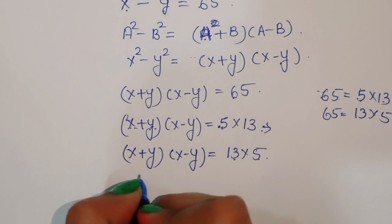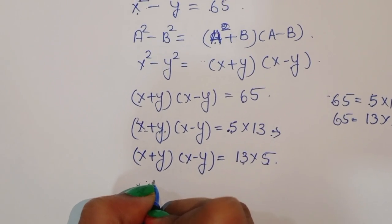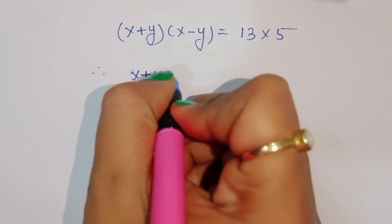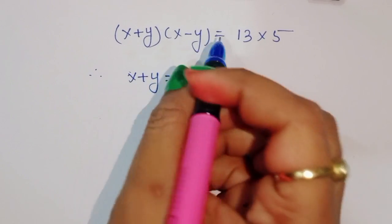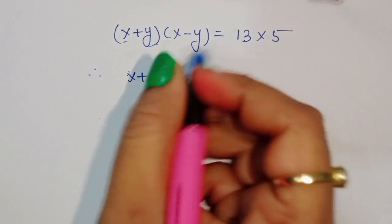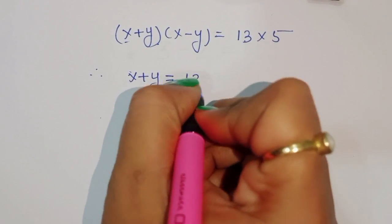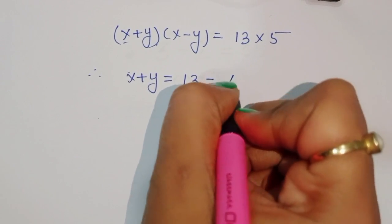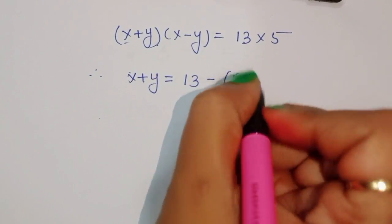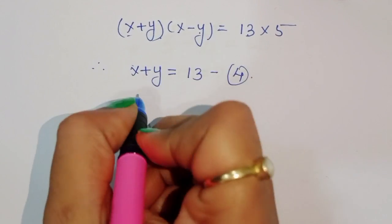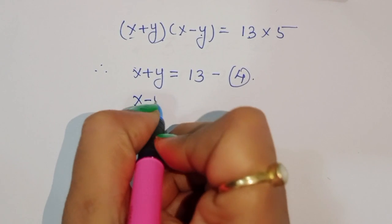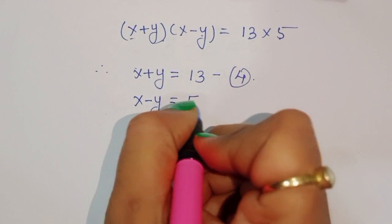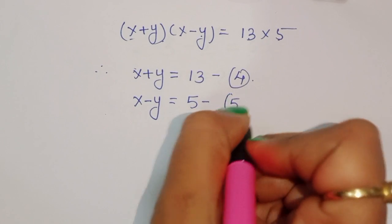Comparing this, we can write: x plus y is equal to 13 — this is equation 4. And x minus y is equal to 5 — this is equation 5.